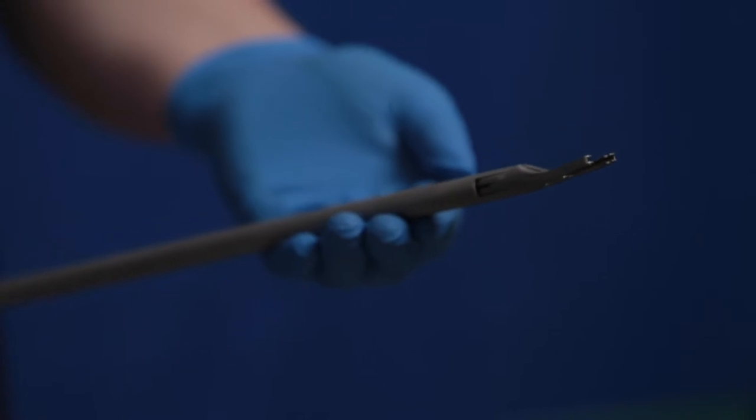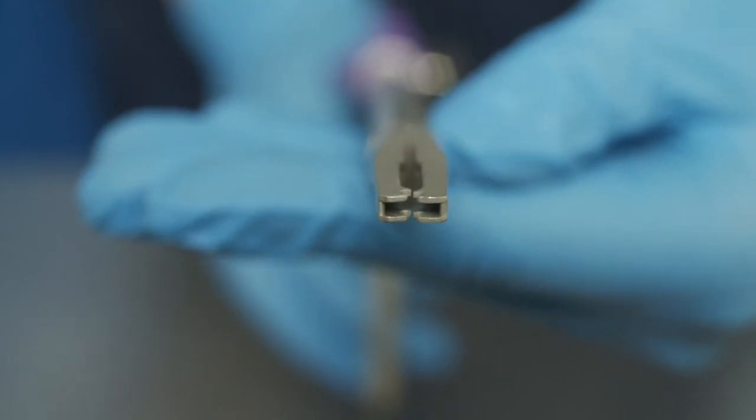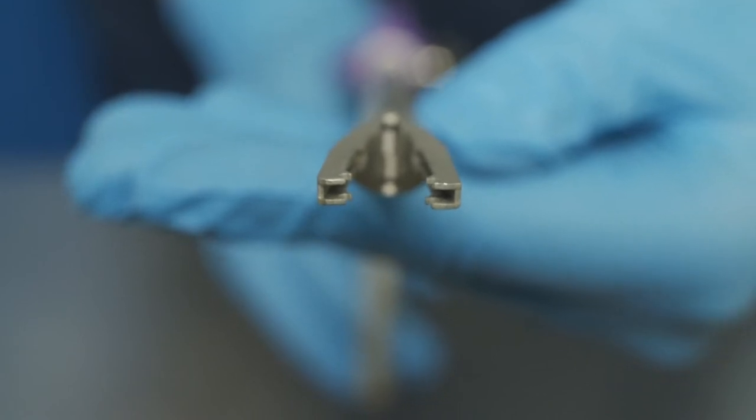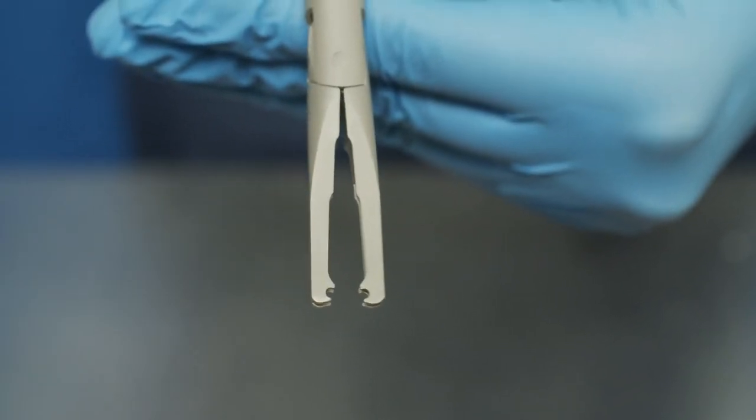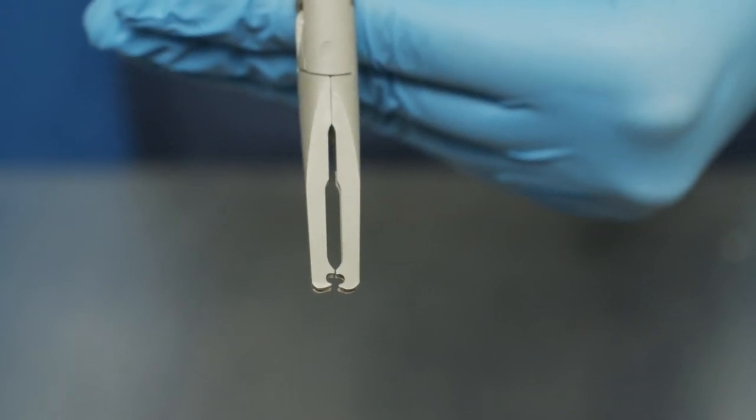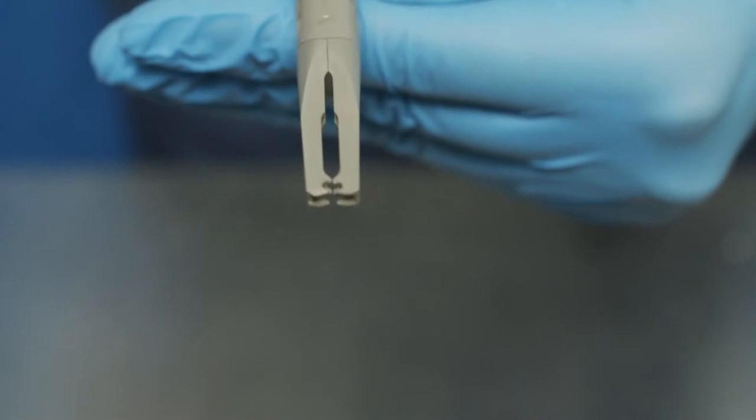Now, check the applier jaws. To do this, turn the applier so that the jaws are facing you. As you open and close the applier, make sure the jaws are directly aligned when closed. It is critical to ensure the jaws are not closing offset to prevent incorrect application of the clip and potential patient injury.